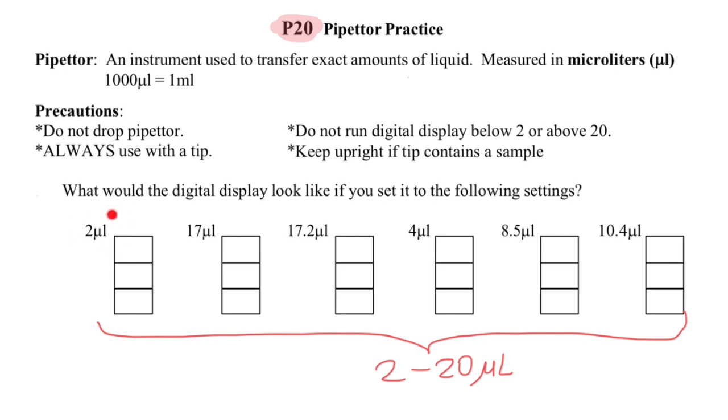So 2 microliters would be 2 here and 0 here. This thick line here represents the decimal point, so it means 2 microliters.